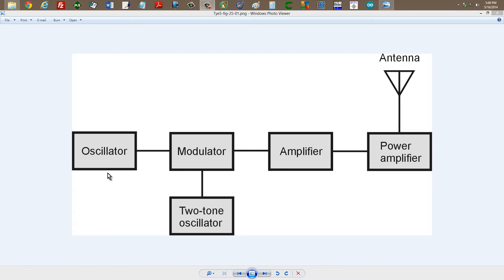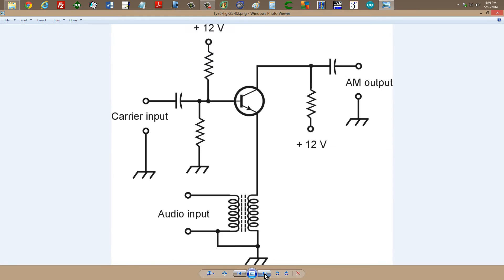You have an oscillator, an amplitude modulator, an amplifier, a power amplifier and your antenna. You can test it with something called a two-tone oscillator applied to the audio input of your modulator circuit. When you do that you get very specific test patterns in the output that you can monitor to see whether or not you have distortion. But normally you would apply your voice audio signal to the input of this modulator in place of the two-tone oscillator. Your result would be an amplitude modulated signal at the output.